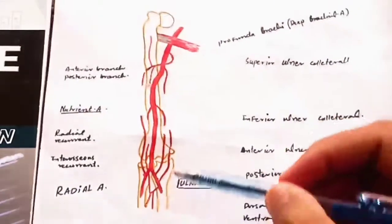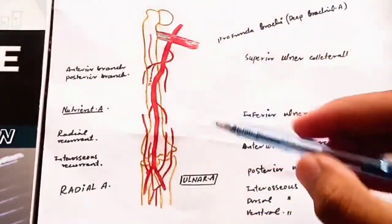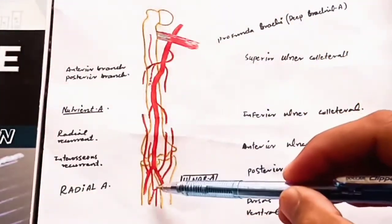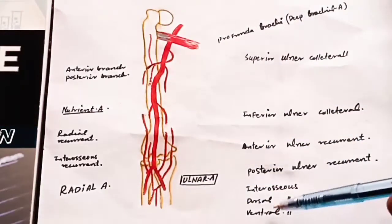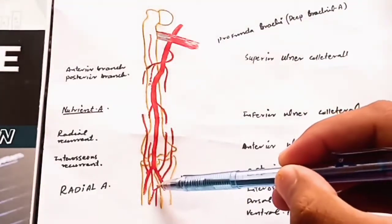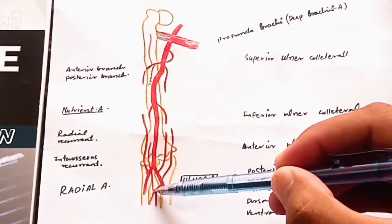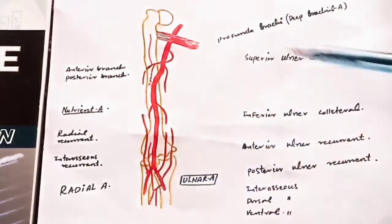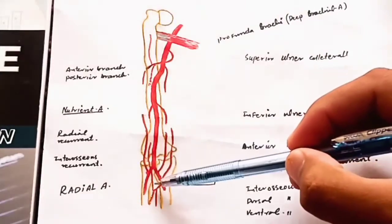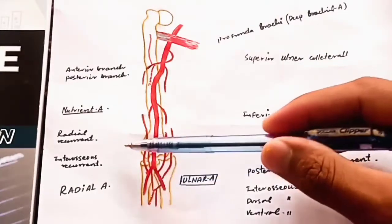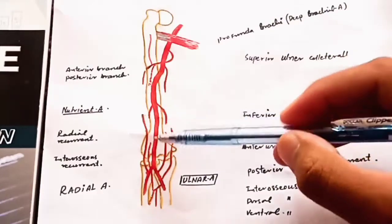Another branch arises from the ulnar artery: the common interosseous artery. The common interosseous artery is further divided into two branches. The one that passes anterior to the interosseous membrane is the ventral interosseous artery, and the one that passes just behind the interosseous membrane is the dorsal interosseous artery.